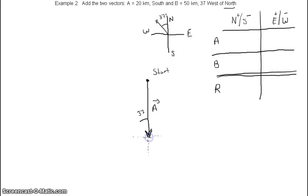So then vector B would start at the end of A and we would draw this vector B, 50 kilometers, 37 degrees west of north. Here's the end of vector B as we end our problem.